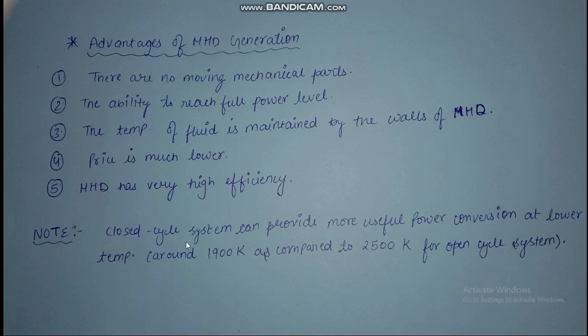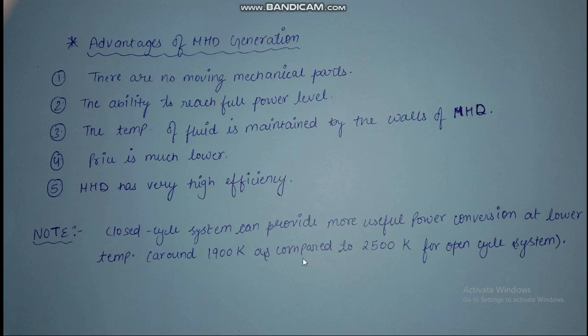Now, an important note: the closed cycle system provides useful power conversion at lower temperatures — around 1900 Kelvin — compared to 2500 Kelvin for an open cycle system. However, the use of MHD is still a distant dream. The heat exchanger design is very difficult because it must operate at the highest temperature of the gas, making it one of the key engineering challenges.